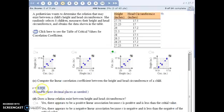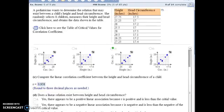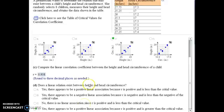And since our correlation coefficient is larger than that, we would say that it does appear that there is a linear association between the child's height and their head circumference. And since this is a positive number, we say it's a positive linear association.